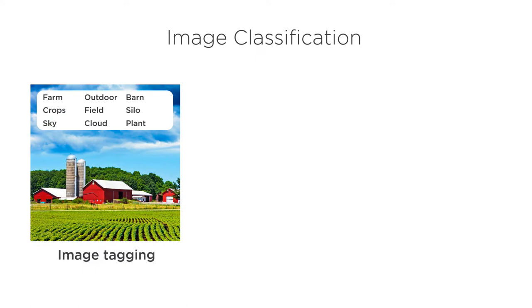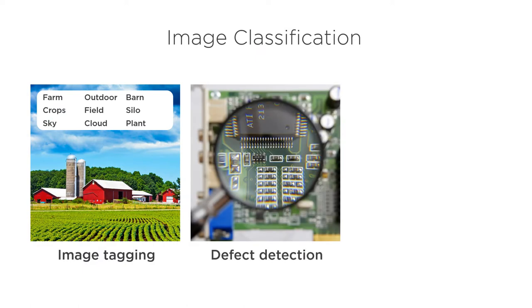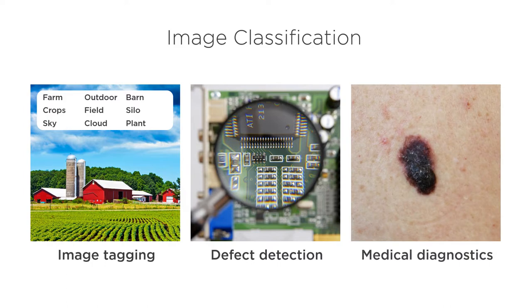Image classification is useful anytime you're trying to assign a categorical label or multiple tags to a collection of images. For example, auto-tagging images on social media posts, detecting product defects via visual inspection, or diagnosing medical issues like detecting certain types of skin cancer.